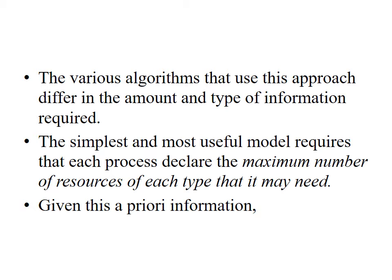The various algorithms that use this approach differ in the amount and type of information required. The simplest and most useful model requires that each process declare the maximum number of resources of each type that it may need. It is possible to construct an algorithm that ensures that the system will never enter a deadlock state. Such an algorithm defines the deadlock avoidance approach. A deadlock avoidance algorithm dynamically examines the resource allocation state to ensure that a circular wait condition can never exist. The resource allocation state is defined by the number of available and allocated resources and the maximum demands of the process.